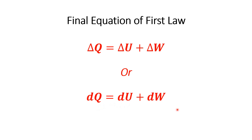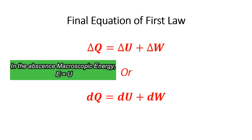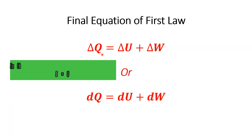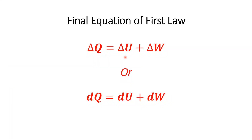The final equation of the first law of thermodynamics is: ΔQ = ΔU + ΔW, or dQ = dU + dW. Here, ΔE has been replaced by ΔU because we assume all macroscopic forms of energy are absent or zero. For example, when working in a laboratory on a compound, no macroscopic forms of energy are present — only the atomic or molecular energy is available. In that case, the first law of thermodynamics becomes: ΔQ = ΔU + ΔW.